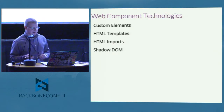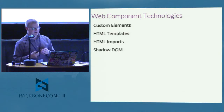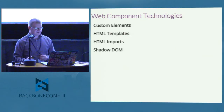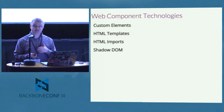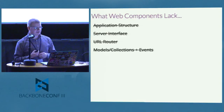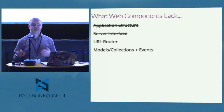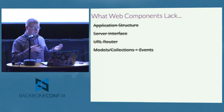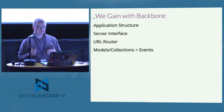Those are the four technologies of web components — and you can combine them in different ways or use them on their own. They give us some game-changing features like Shadow DOM and custom elements, but they don't replace all of our web applications. We don't get application structure, server interaction, URL routing, or models, collections, and events for reacting to changing data. But it turns out we have all of these with Backbone. So I don't think web components replace Backbone — I think they work very nicely together.